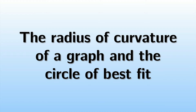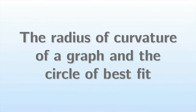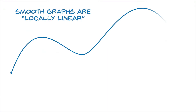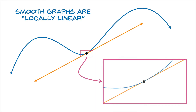Hello everybody. In this video we're going to look at the radius of curvature of a graph and the circle of best fit. At this point you should be pretty comfortable with the idea that smooth graphs are locally linear, which is to say that when you zoom in near a point on a graph, that graph starts looking more and more like a line.